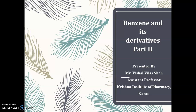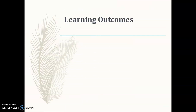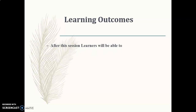There are certain physical and chemical methods used to determine the structure of a given compound. By using these methods, the structure of benzene was derived. The learning outcome of this session is that learners will be able to explain the structure of benzene. So let's begin.